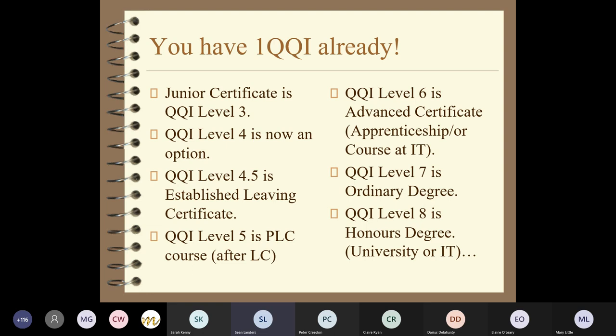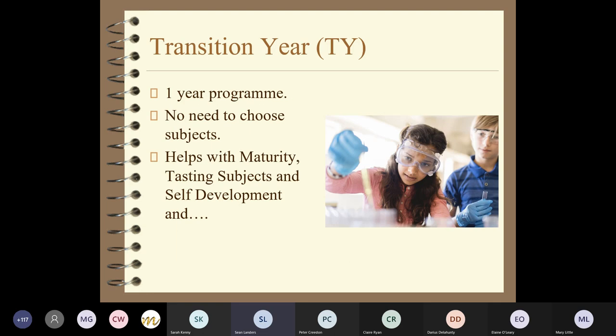Level four point five is the Established Leaving Certificate. Level five is a leaving certificate course that you can do for one year after your leaving certificate. There was a level six - it's an advanced certificate, it's a craft apprenticeship. So if you do an apprenticeship you'll get a level six, and if you do a two-year course in an IT it's also a level six. Everything has a level listed.